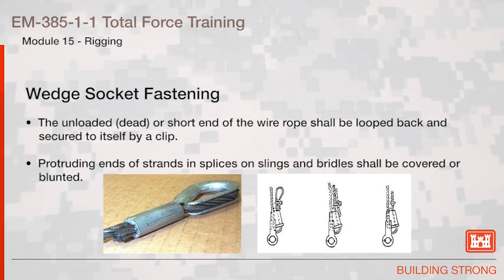Wedge Socket Fastening. The unloaded, dead, or short end of the wire rope shall be looped back and secured to itself by a clip. Protruding ends of strands in splices on slings and bridles shall be covered or blunted.